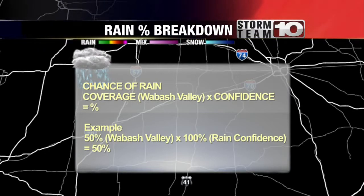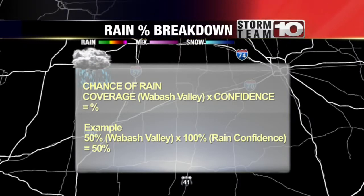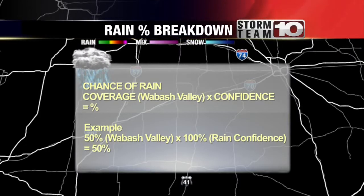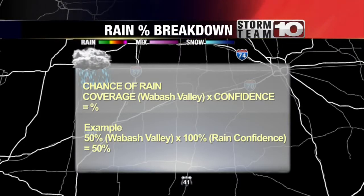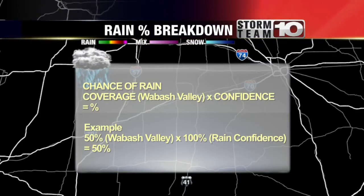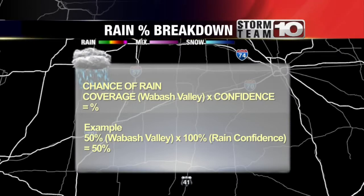For example, if we believe that at any given time you have a 50% chance to see rain through the Wabash Valley, whether you are in Terre Haute or Vincennes, and we know that there is a 100% rate to see rain, that will equal a 50% rain chance on the seven-day, using the given formula seen here.